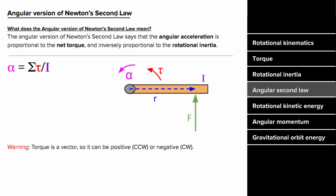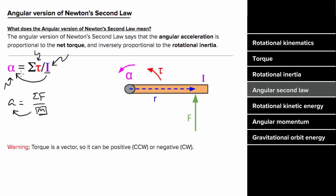What is the angular version of Newton's second law? Newton's second law says acceleration equals net force divided by mass. The angular version says angular acceleration equals net torque divided by rotational inertia. Mass tells you how much an object resists acceleration; moment of inertia tells you how much it resists angular acceleration. Just as you must track signs when adding force vectors, you must treat counterclockwise or clockwise as positive and be consistent with torque vectors.